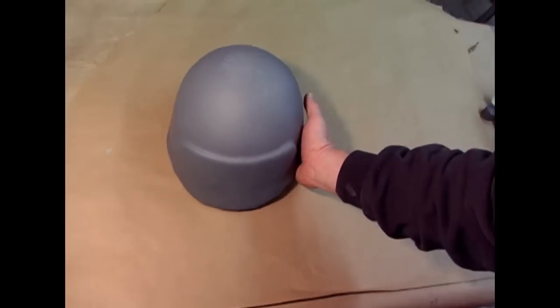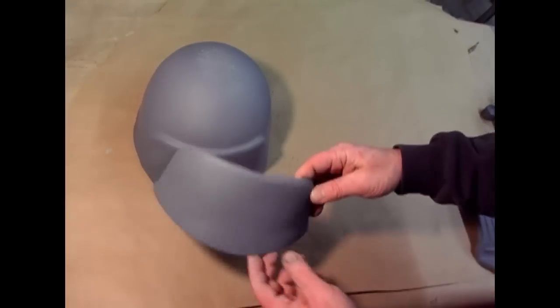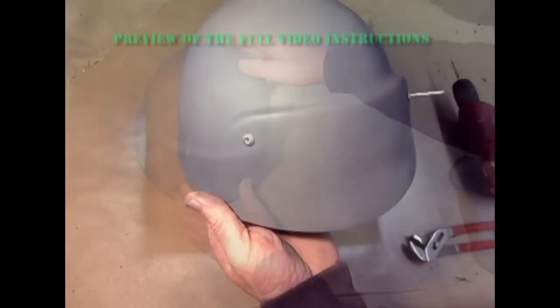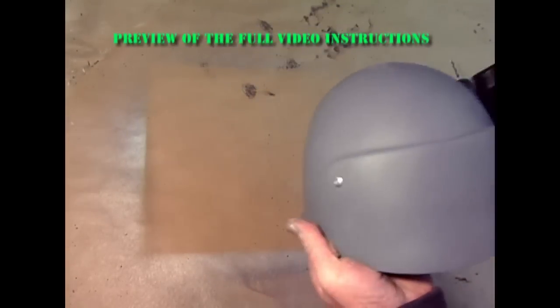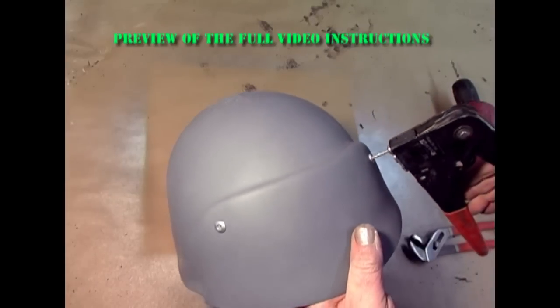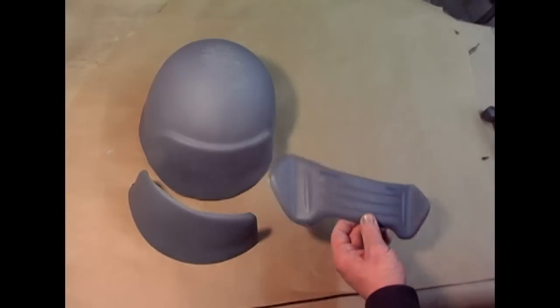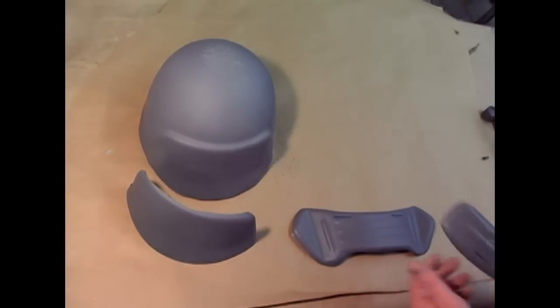This is the forehead plate, also made in 0.125 gauge plastic. This will be riveted directly onto the helmet. Then we have the top and bottom lobster plates. These are also thermal formed shells.